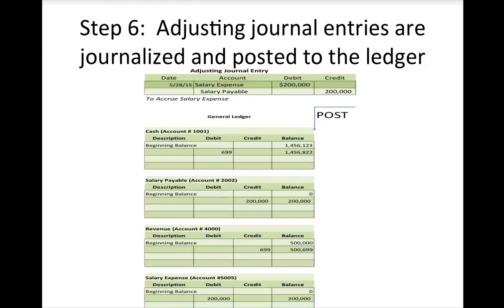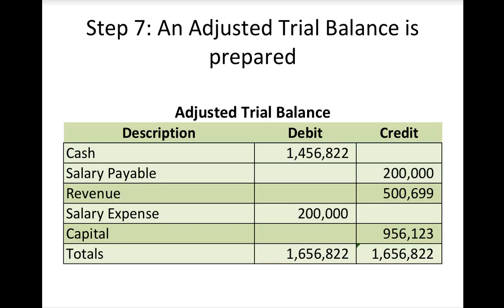Step six: I decide to make that adjusting journal entry, so I journalize it and then post it to my ledger — same as writing it down in the journal and copying it into my buckets. After journalizing and posting, the next step is always a trial balance. This one is called the adjusted trial balance because it comes after the adjustment. My debits equal my credits, so I am good.